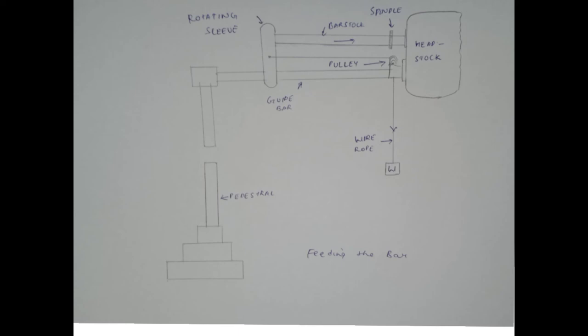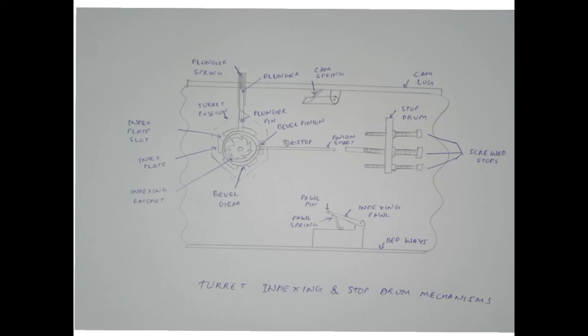Now we will go to the last part of the discussion, the turret indexing and stop drum mechanism. In the diagram drawn, we can see that the index plate, indexing ratchet, and pebble gear are also mounted on the turret spindle which carries the turret head on its top.